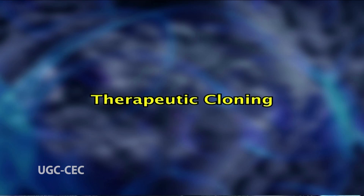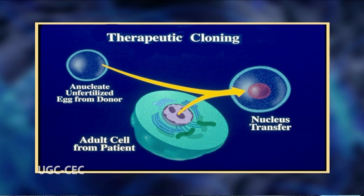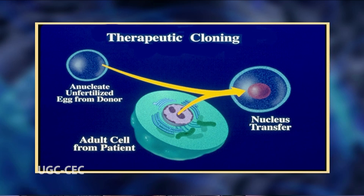Therapeutic cloning may make it possible to customize embryonic stem cells so that they possess the same genetic makeup as the individual being treated, avoiding attack by the recipient's immune system. This can be accomplished by a procedure called somatic cell nuclear transfer (SCNT), also known as therapeutic cloning, which begins with an unfertilized egg obtained from the ovaries of an unrelated woman donor.